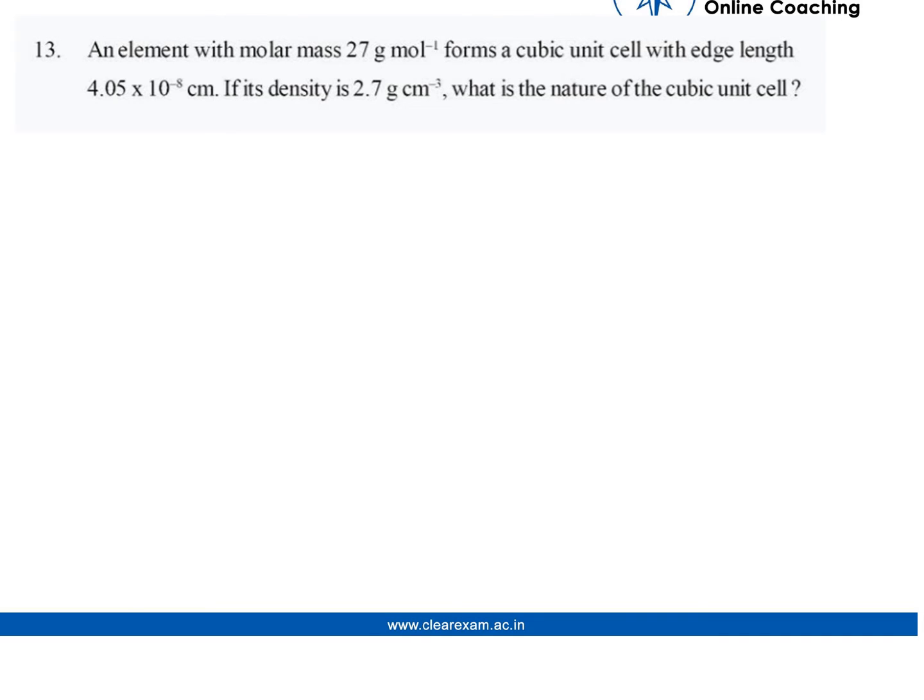The question is: An element with molar mass 27 g/mol forms a cubic unit cell with edge length 4.05 × 10⁻⁸ cm. If its density is 2.7 g/cm³, what is the nature of the cubic unit cell?